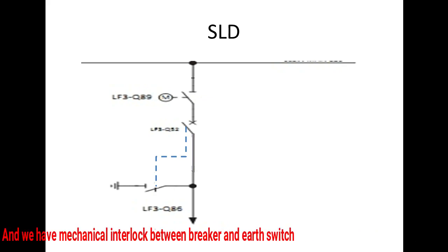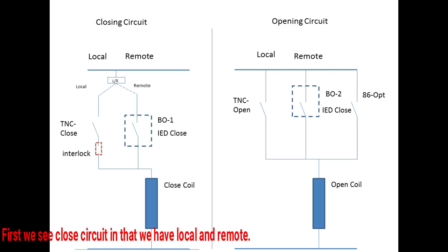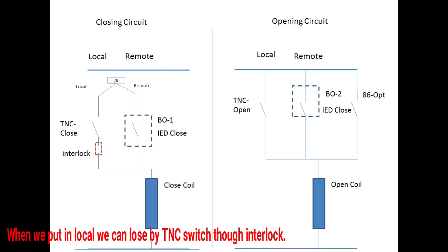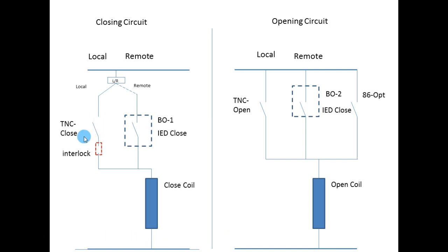We have a mechanical interlock between the breaker and isolator. This is the closing and opening circuit. In the closed circuit we have a local and remote switch. When you put the switch in local, we can close by TNC switch through interlocks. When we put the switch to remote, we can close only by relay, by IED through soft logic.